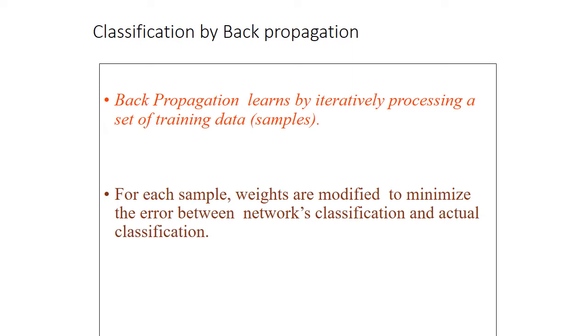For each sample, weights are modified to minimize the error between the network's classification and actual classification. The task of backpropagation is to reduce the error by iteratively updating the weights. In this case, our task is to reduce the error.